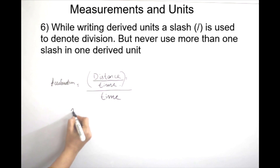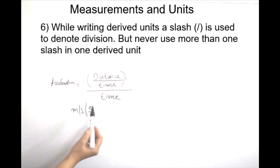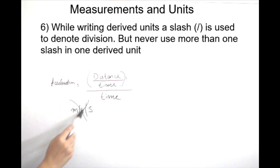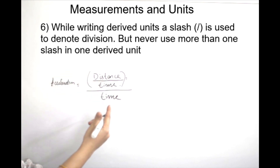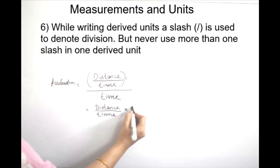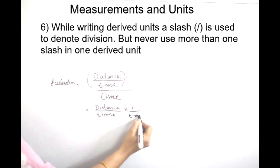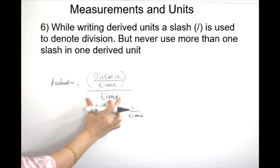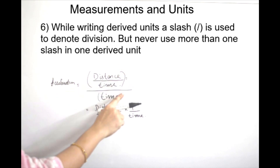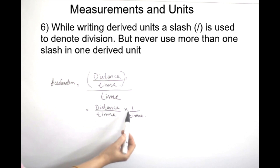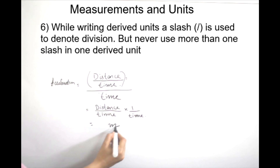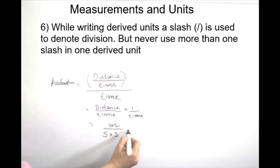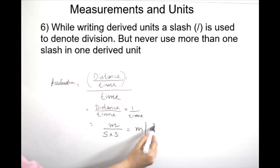We can express it further, but we can't do that with two slashes. To solve this, we multiply by the reciprocal of the denominator. That is, meter divided by second into second — giving us meter per second square.